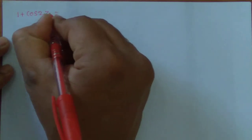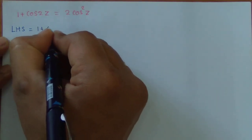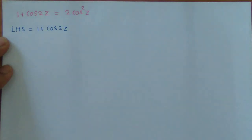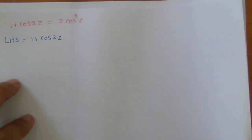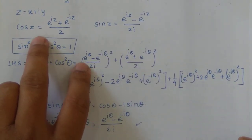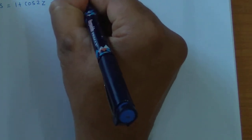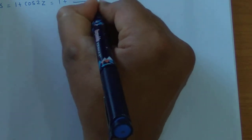Now we are going to see one more identity, this time where z = x + iy is a complex quantity: 1 + cos 2z = 2cos²z. We begin with the LHS = 1 + cos 2z. Using the definition of cos z, cos 2z = (e^(i·2z) + e^(-i·2z))/2. So LHS = 1 + (e^(i·2z) + e^(-i·2z))/2.